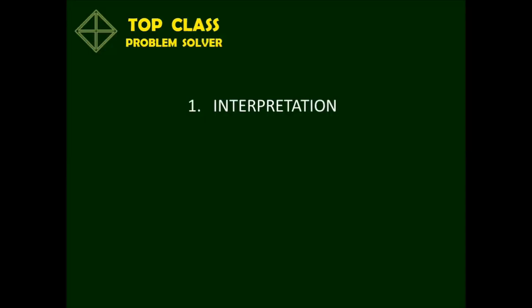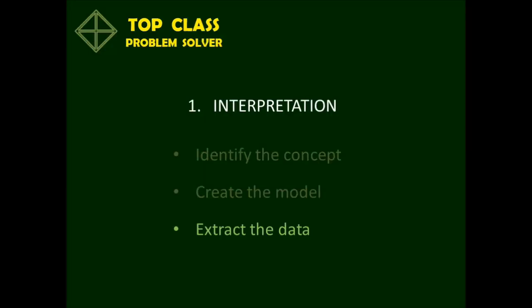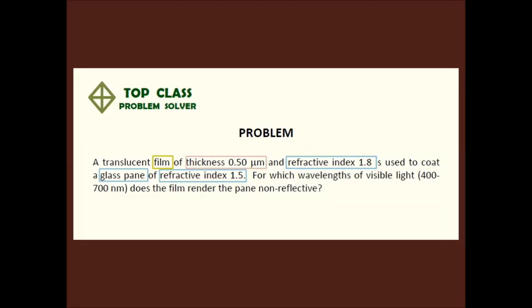The third step of the interpretation is to extract the data carefully from the problem. We record the actual refractive indices of the film and of the glass pane, and we also record the thickness of the film.